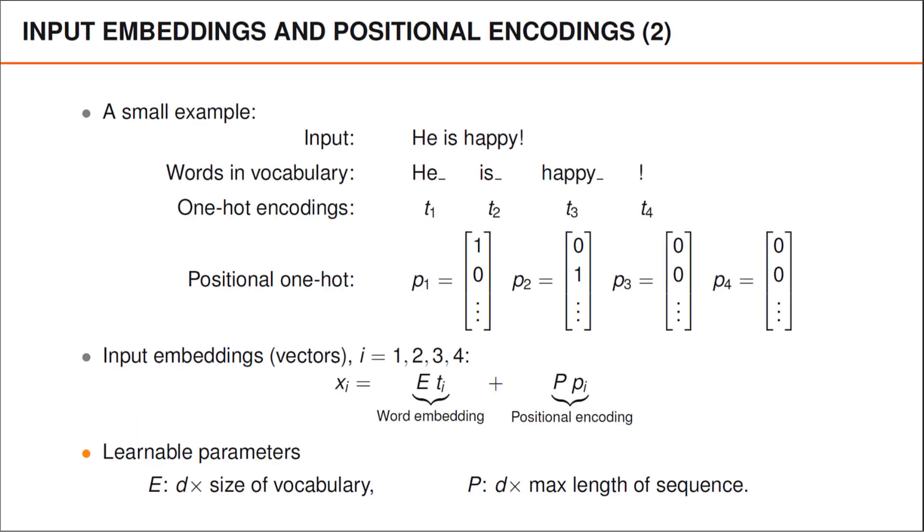Importantly, both capital E and capital P are matrices that we can learn from data along with all the other parameters in our network.